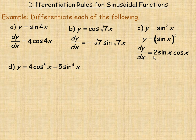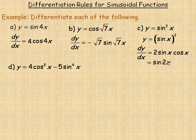Now if you remember your trig identities, there is a simpler way to write this. 2·sin(x)·cos(x) is the same as sin(2x). So the derivative of sin²x is actually sin(2x) — that is a simpler version of the same derivative.